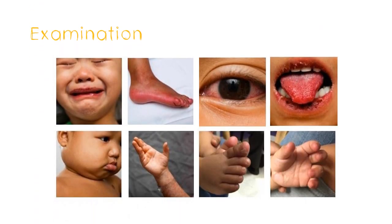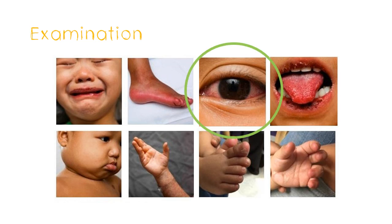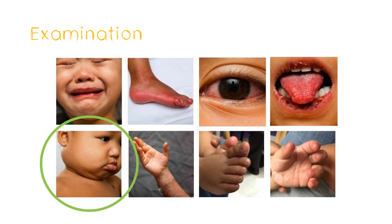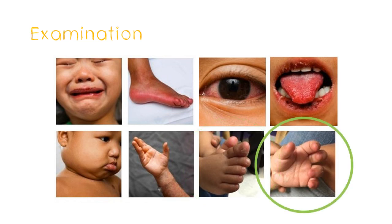On examination, you can see periungual desquamation and erythema, like in this picture, and red soles and palms, like this. You can also get a non-purulent conjunctivitis, as I mentioned before, and the characteristic strawberry tongue shown in this picture. In this image, you can see cervical lymphadenopathy. Here is the non-vesicular rash you get in Kawasaki disease, and the next two pictures show desquamation and erythema of the hands and feet.